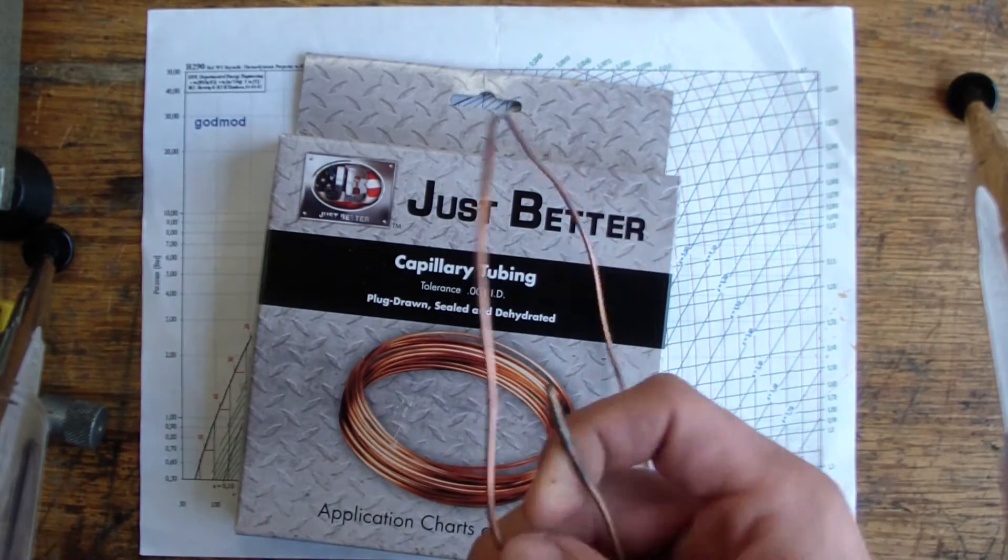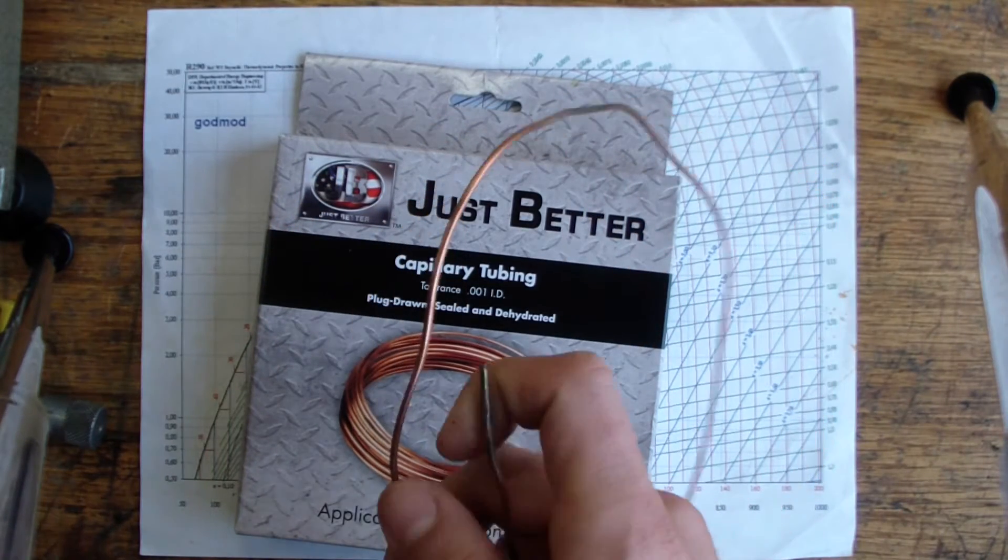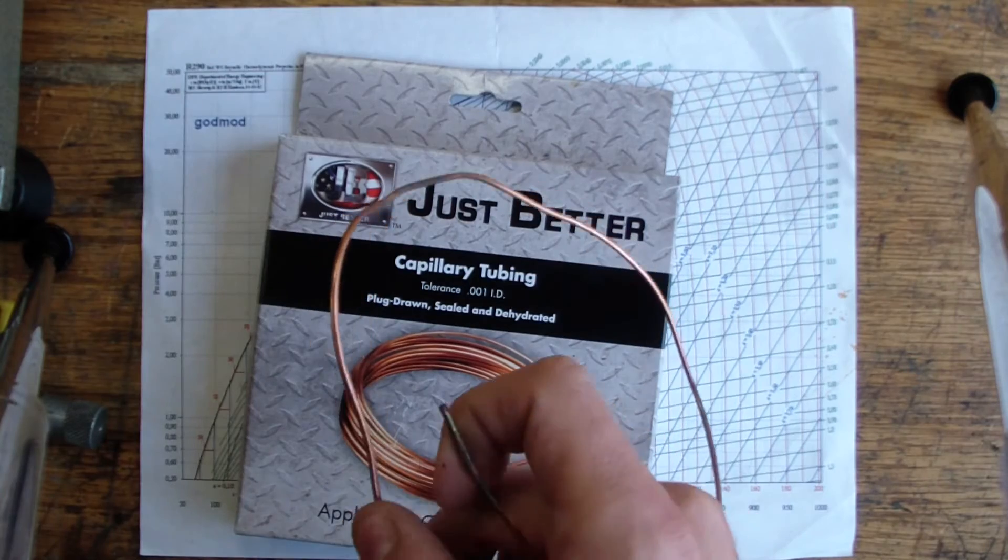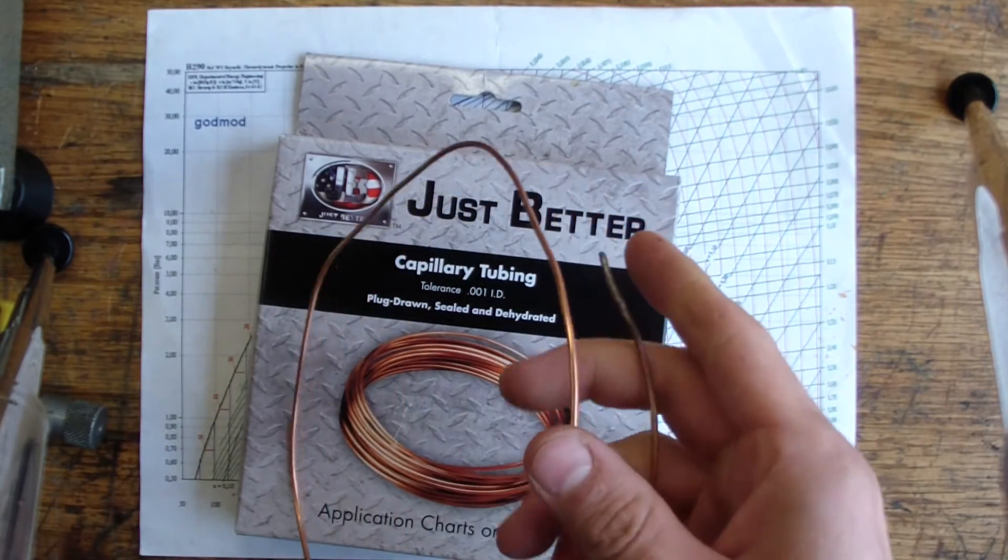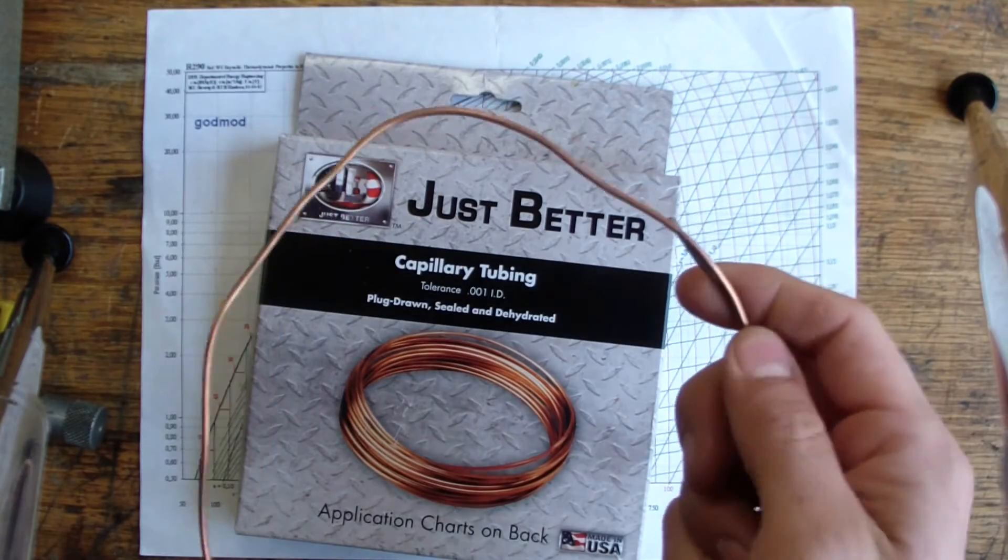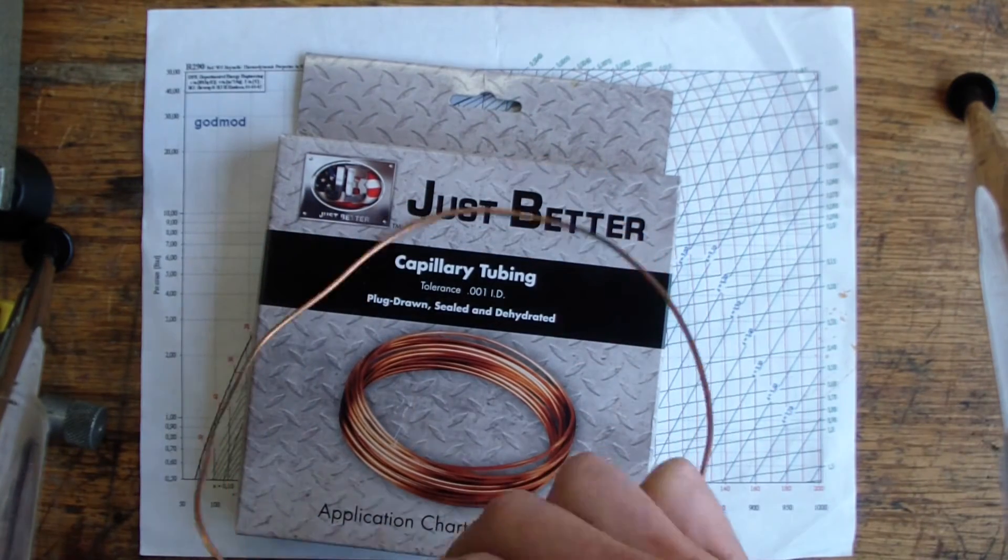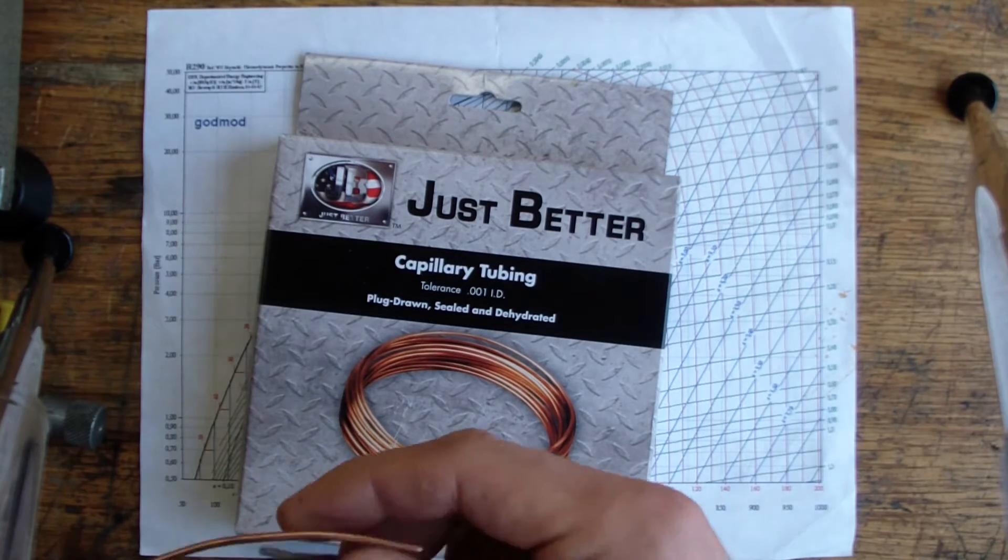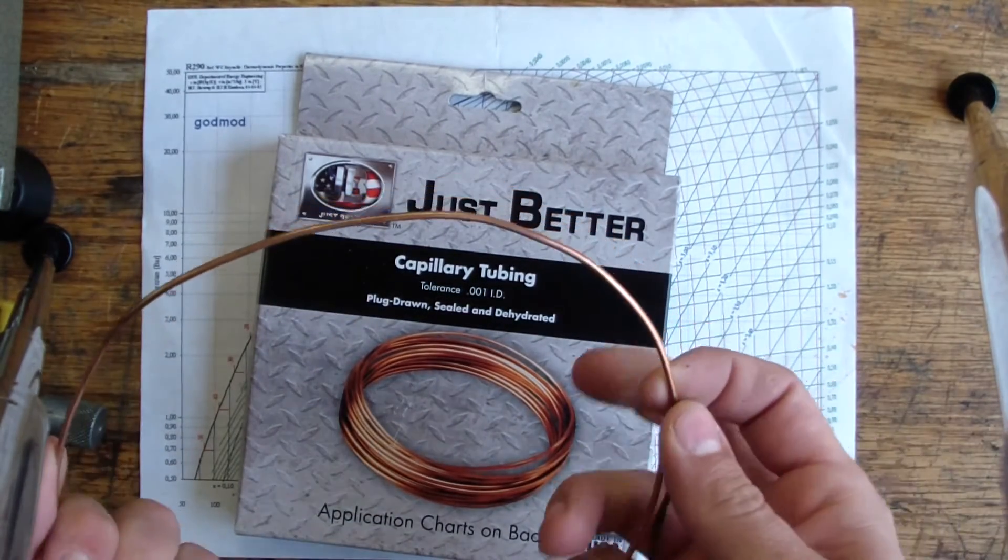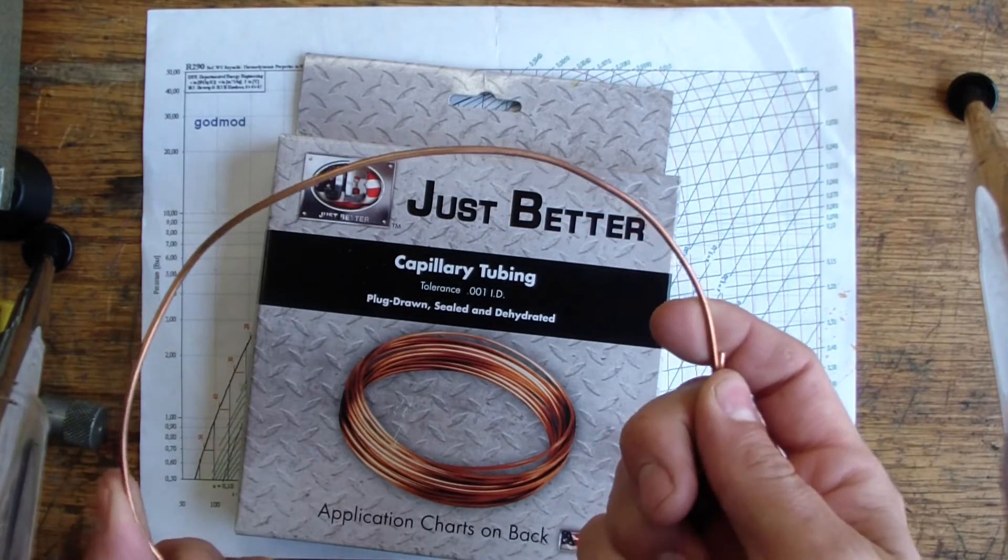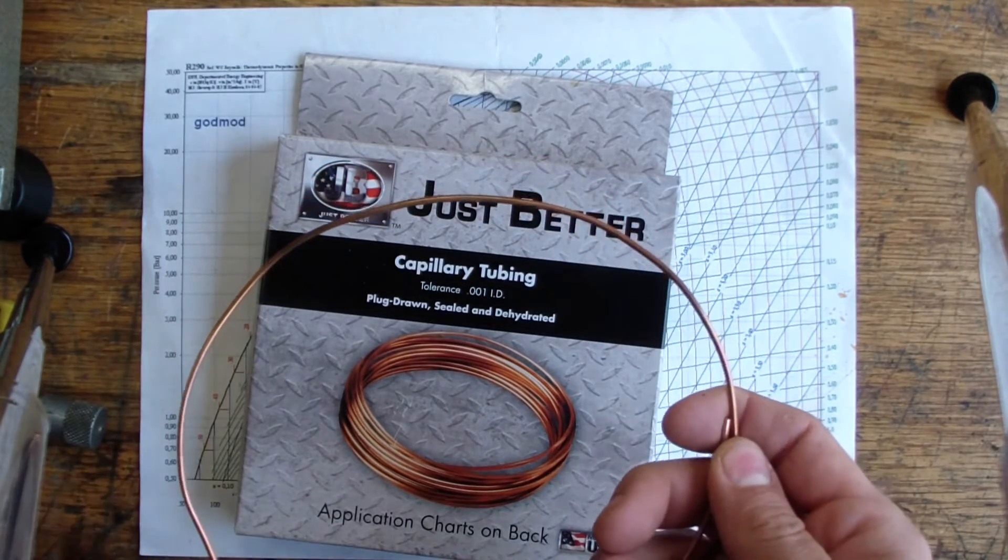And unlike a fixed orifice, which doesn't have no way to regulate refrigerant flow through it and the conditions, the capillary tube can do that to a certain extent. Capillary tube can maintain a liquid plug before it in a relatively wide range of ambient conditions, unlike a fixed orifice.